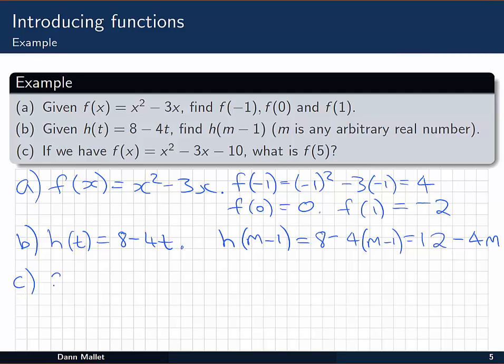Okay, in part c, we've got f of x is x squared minus 3x minus 10, and we're asked, what is f of 5? That's fairly simple—we'll just substitute, replace any x's with 5's. So we get 5 squared minus 3 times 5 take away 10.